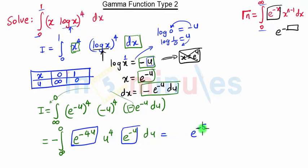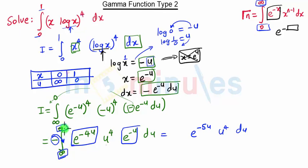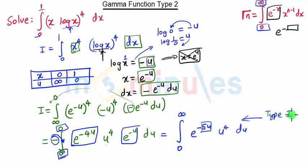Combining e raised to minus 4u and e raised to minus u, we get e raised to minus 5u times u raised to 4, du. We have integration from infinity to 0, but we want 0 to infinity. We take the negative sign inside the integration so the limits get exchanged, giving integration from 0 to infinity. In this equation we have e raised to minus 5u — a single variable term — so this is now of Type 1. Any Type 2 gamma problem always reduces to Type 1, and we will now solve it using Type 1.